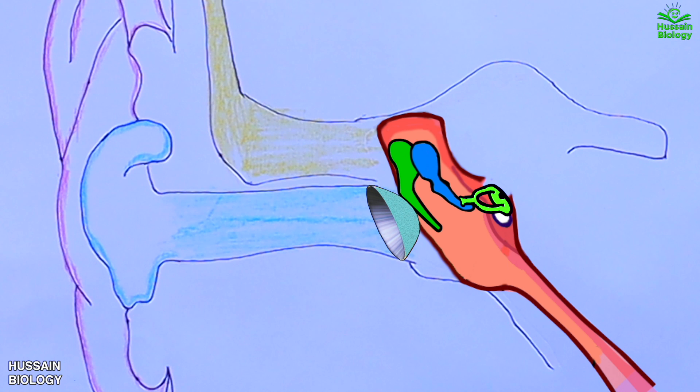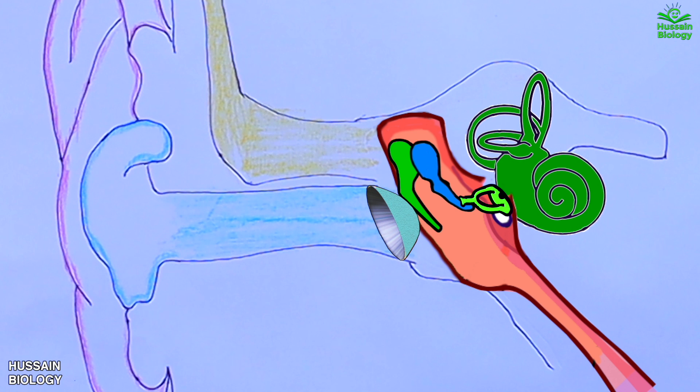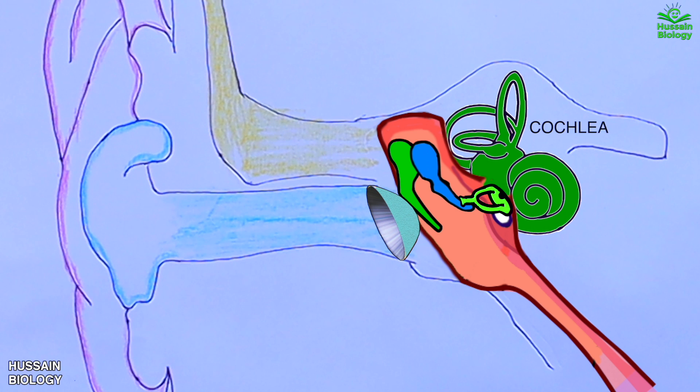Now we have the cochlea, which is a fluid-filled structure and it has semicircular canals as shown in the diagram. These semicircular canals are connected with the vestibular nerve, and the cochlea is connected by the cochlear nerve.